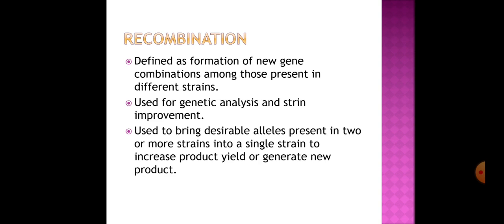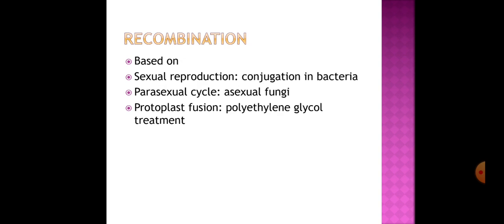The next method of strain improvement is recombination, defined as formation of new gene combinations among those present in different strains. It is used for genetic analysis and strain improvement, to bring desirable alleles from two or more strains into a single strain, thereby increasing product yield or generating a new product. Recombination methods include: sexual reproduction; conjugation in bacteria; parasexual cycle in asexual fungi; and protoplast fusion using polyethylene glycol treatment to fuse protoplasts of two different species.